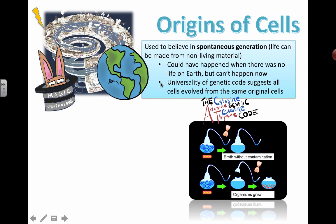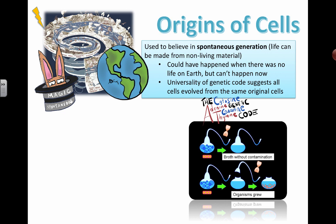This relates to evolution. When you study it, you'll hear about the universality of the genetic code. It's the reason why we can use biotechnology to move genes from one organism to another. The fact that the genetic code is the same in all living things — from viruses to bacteria to humans to butterflies — tells us that we're all connected. The genetic code is universal, and it tells us that all cells that exist were perhaps related to previous cells.